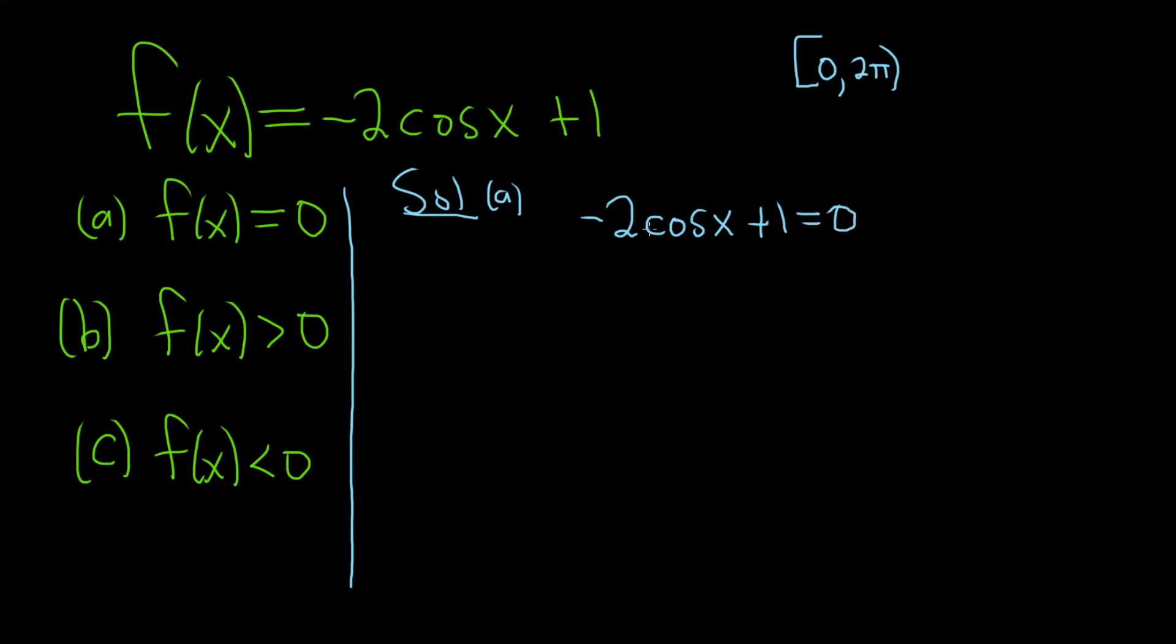All right, because we have a single trig function, that's not so bad. We can subtract 1 from both sides. So, we have negative 2 cosine x, and that's equal to negative 1. Because the cosine function is being multiplied by negative 2, we can undo that by dividing by negative 2. So, we have cosine of x, and that's equal to 1 over 2.